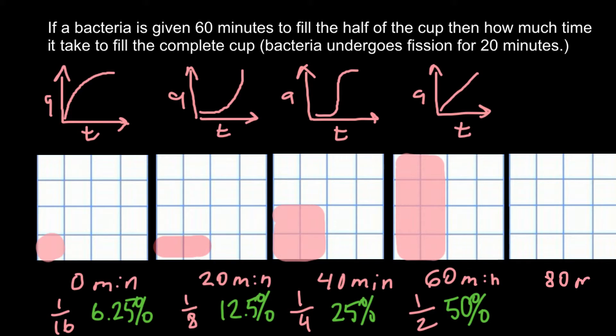This gives us information that in another 20 minutes, when time would be 80 minutes, we would have a full dish occupied with bacteria. So in another 20 minutes we expect that the whole petri dish would be occupied with bacteria, and this is going to be 100 percent.